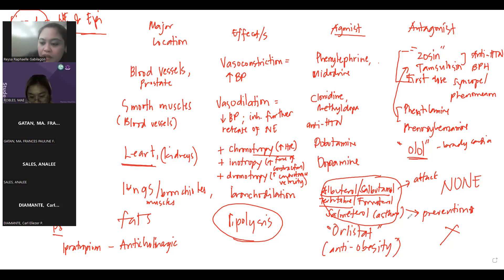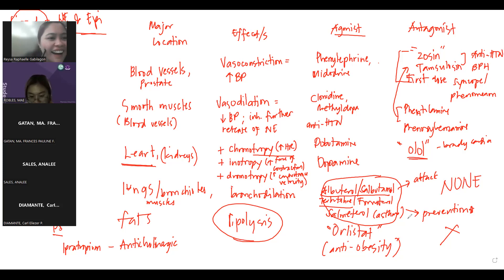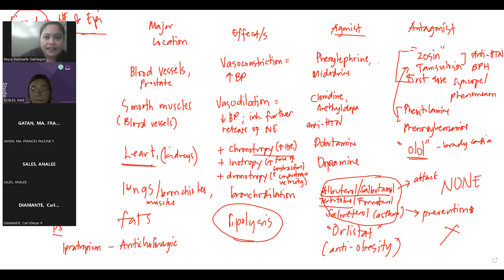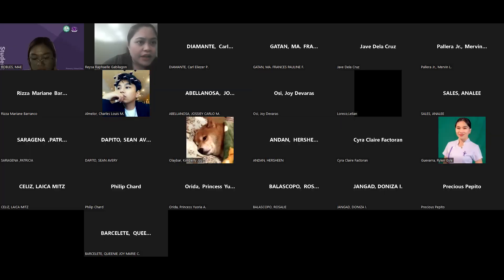For this review, you need to know where each receptor is found, what the effect of stimulation is, examples of agonists and their clinical applications, and examples of antagonists. We'll continue on Wednesday with a quiz covering the autonomic nervous system review.